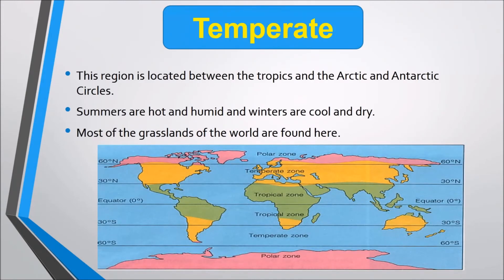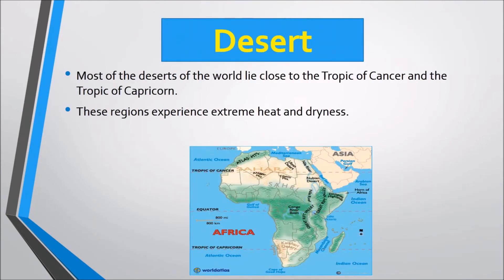Next is the Temperate Zone, located between the tropics and the Arctic and Antarctic circles. Summers are hot and humid and winters are cool and dry. Most of the world's grasslands are found here. Next is the Desert region — most of the world's deserts lie close to the Tropic of Cancer and the Tropic of Capricorn, and this region experiences extreme heat and dryness.